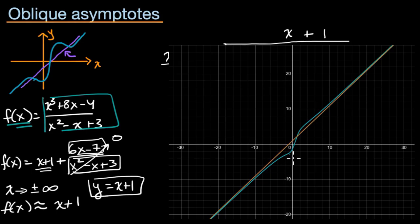Our function is in that teal color. And you could see it does all this stuff when x is relatively small in magnitude, but as it gets larger and larger and larger, or more and more negative, it is approaching y equals x plus 1, which is that yellow line right over here. That is that yellow line, which is the oblique asymptote.